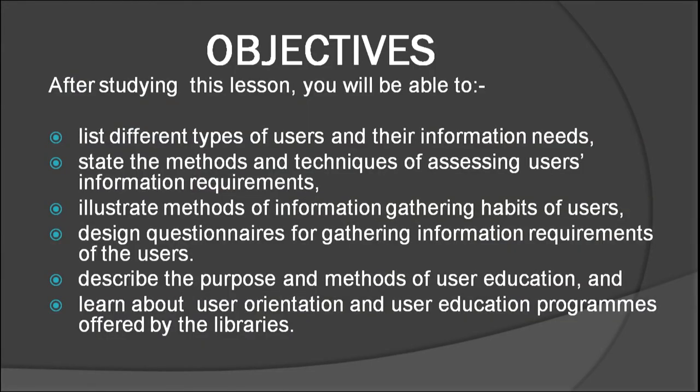The objectives of this chapter cover different types of users and their information needs, methods and techniques of accessing users' information requirements, methods of information gathering habits of users, designing questionnaires for gathering information requirements, describing the purpose and methods of user education, and learning about user orientation and user education programs offered by the library.